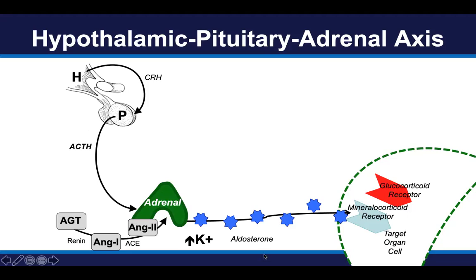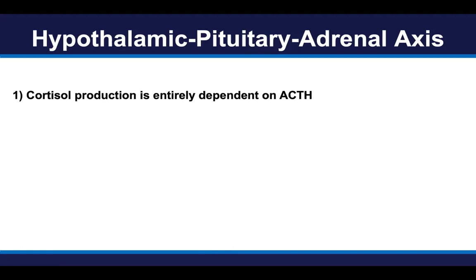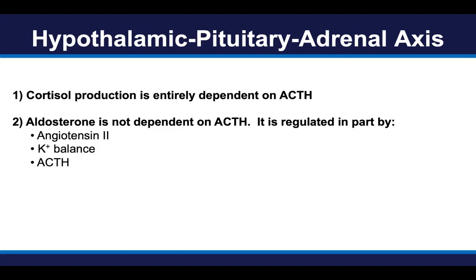In contrast to cortisol, aldosterone production is regulated in part by ACTH, but also independently by several other factors: angiotensin 2 and high potassium. To summarize, cortisol production by the adrenal glands is entirely dependent on ACTH. In contrast, aldosterone production is not entirely dependent on ACTH — it is in part regulated by ACTH, but also independently regulated by angiotensin 2 and potassium balance. So there are three independent regulators of aldosterone, but one pure regulator of cortisol.